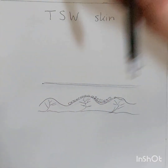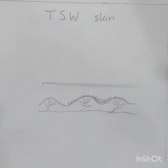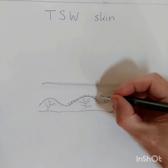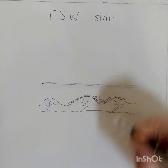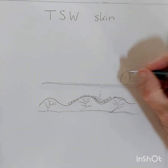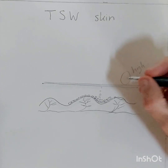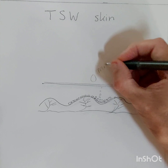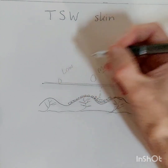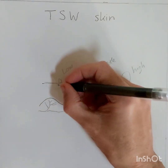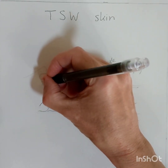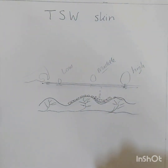Now let's have a look at the skin of topical steroid withdrawal syndrome. In this case the skin is much thinner. We again have the capillaries, the stem cells, the skin cells going up, and the upper layer is also thinner. In TSW skin, high-level irritants cause irritation to the skin, and middle-level irritants also cause irritation. Low-level irritants in TSW skin also cause irritation. And scratching also causes irritation to the skin.